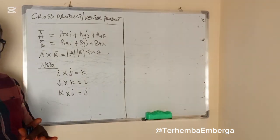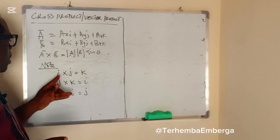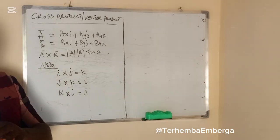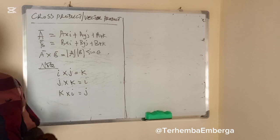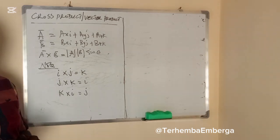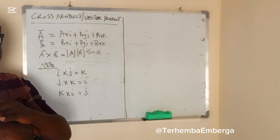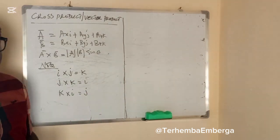You need to know also that cross products of two vectors is not commutative. What does commutativity mean? Once you interchange the position of these two vectors, they will never give you the same results.